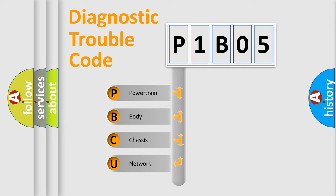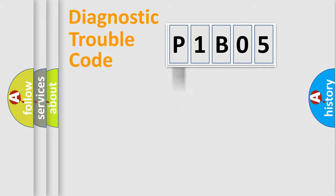We divide the electric system of automobile into four basic units: Powertrain, Body, Chassis, and Network. This distribution is defined in the first character code.